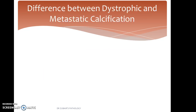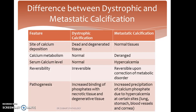Let us look at the differences between dystrophic and metastatic calcification. Dystrophic calcification occurs in dead and degenerated tissue — D for dystrophic, D for dead, D for degenerated — whereas metastatic calcification occurs in normal tissue. In dystrophic calcification, calcium metabolism is normal and so is the serum calcium level. In metastatic calcification, there is hypercalcemia with deranged calcium metabolism.